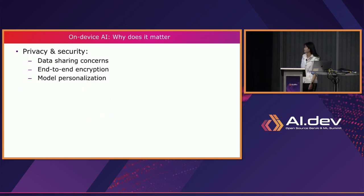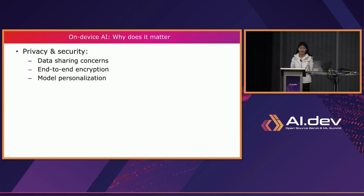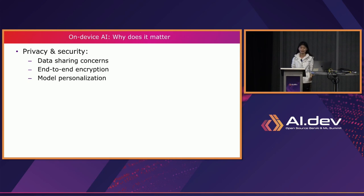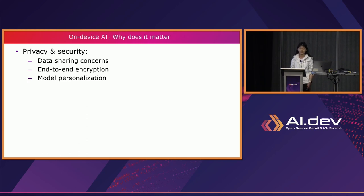For privacy and security: any model running on the cloud means I need to send my data to the cloud, the model runs inference, and then sends data back. If we run on-device, users don't need to share data to the cloud. For example, my watch monitors my heartbeats and cadence — I probably don't want to share my daily routine and sensitive biometric information. It also enables training personalized models with your own data without worrying about sharing sensitive data to the cloud.